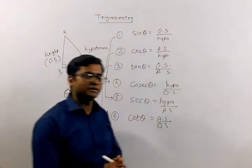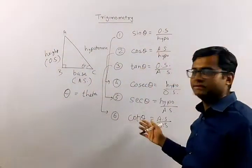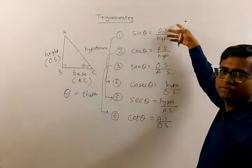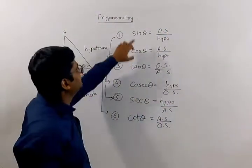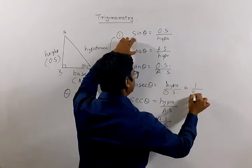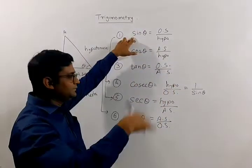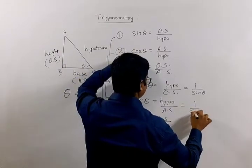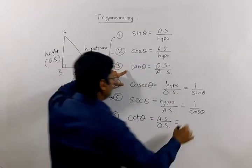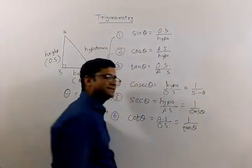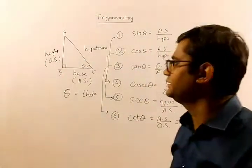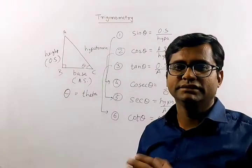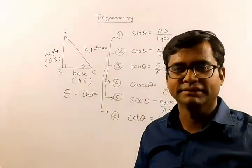So these are the six trigonometric ratios. We can observe that cosec is the reciprocal of sine theta, sec is the reciprocal of cos theta, and cot is the reciprocal of tan theta — reciprocal meaning one divided by that value. These are the six basic ratios defined in trigonometry, and using these ratios we do many mathematical things in trigonometry, which we will see in our upcoming classes.